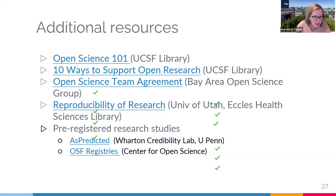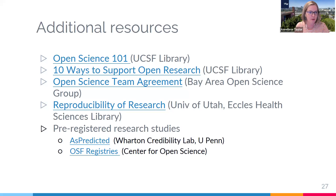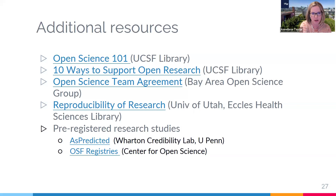Some additional resources that might be of interest: our Bay Area Open Science Group produced an open science team agreement worth checking out. The University of Utah Health Sciences Library has a great reproducibility research resource. Related resources include pre-registered research studies — the idea of registering in advance what research methods will be used and then sharing results regardless of whether they're negative or positive, which is another interesting topic related to protocol sharing. And with that, I will hand over to Lenny.